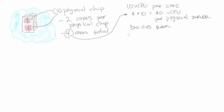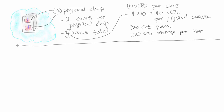This box as configured will support 40 virtual CPUs. Let's throw 320 gigabytes of RAM in there for conversation's sake, and then let's add storage at 100 gigabytes per VM — really we're talking per VM for users.